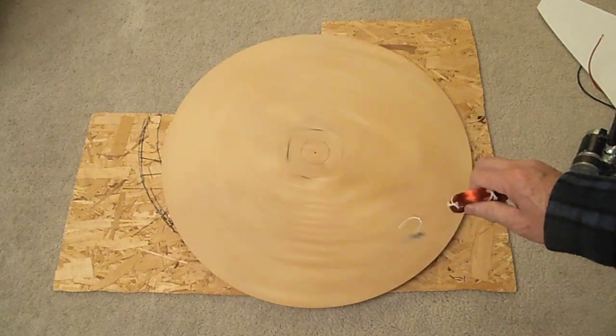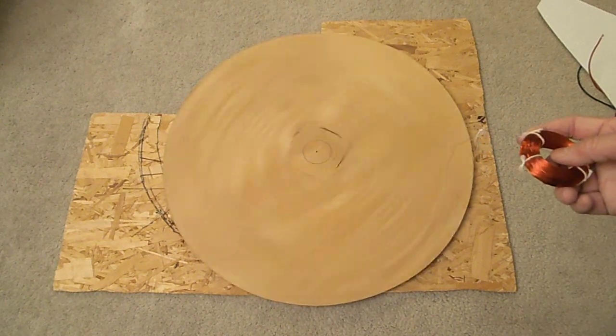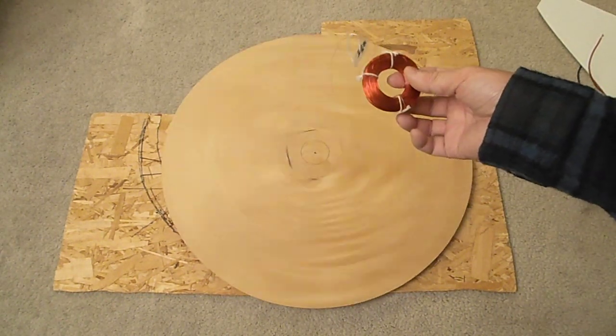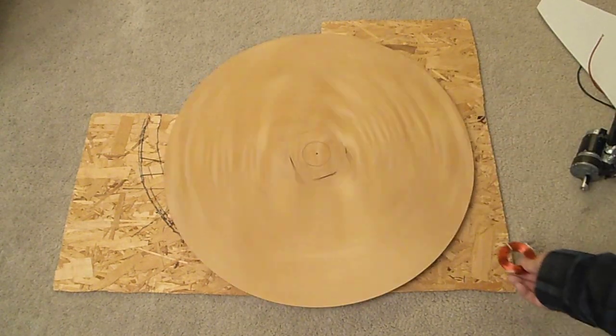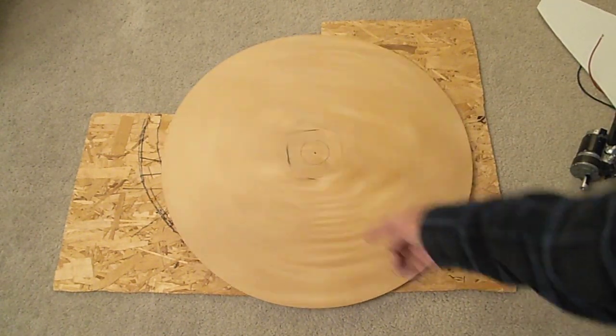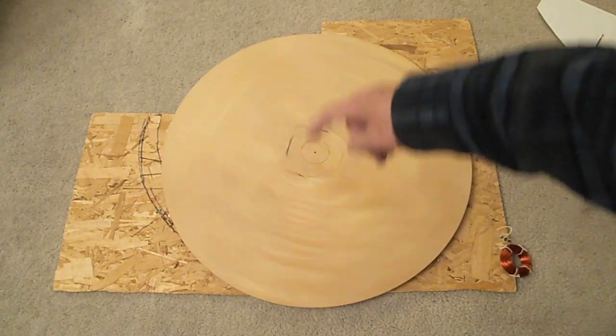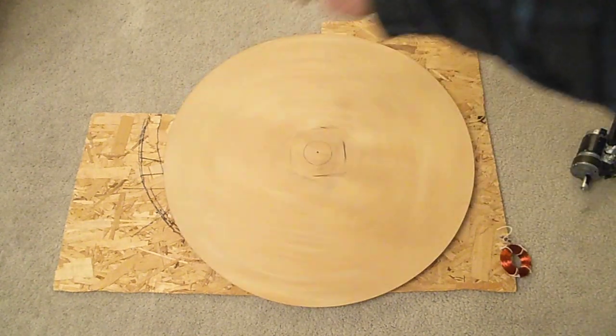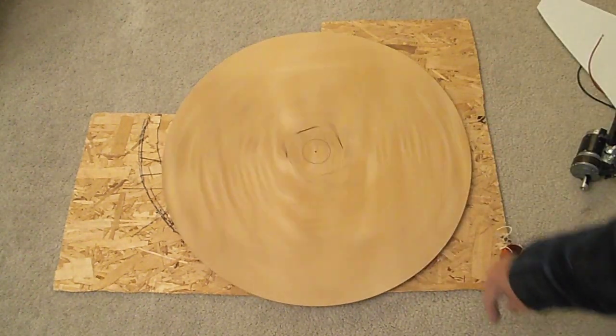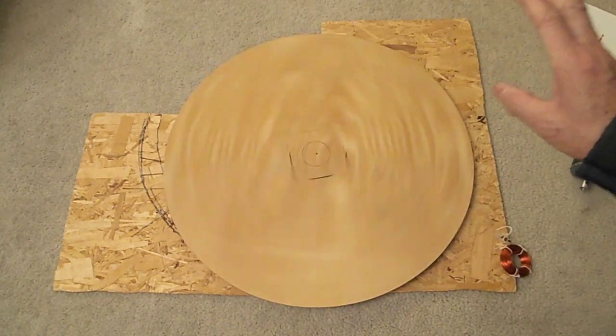I think I can easily adapt this turntable to be like a vertical axis wind turbine. Place the coil underneath the turntable, stick some magnets underneath the wooden platter, maybe add some sheet metal fins. It doesn't have to be a very big unit.